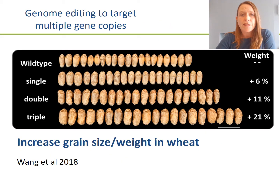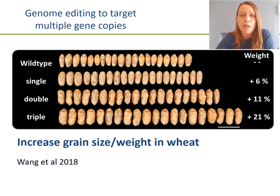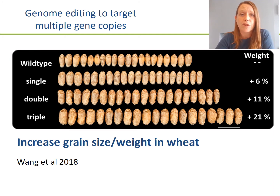Where genome editing really comes into its own is when we want to target multiple copies of a gene. In wheat, for example, it's a complex genome that typically contains three copies of each gene, and the genetic sequence changes slightly between those copies. Depending on how we design our guides, we can target a single copy, two copies, or all three copies to create a loss of function mutation. In this example, you can see how we can significantly increase grain size by knocking out all three copies of a particular gene.